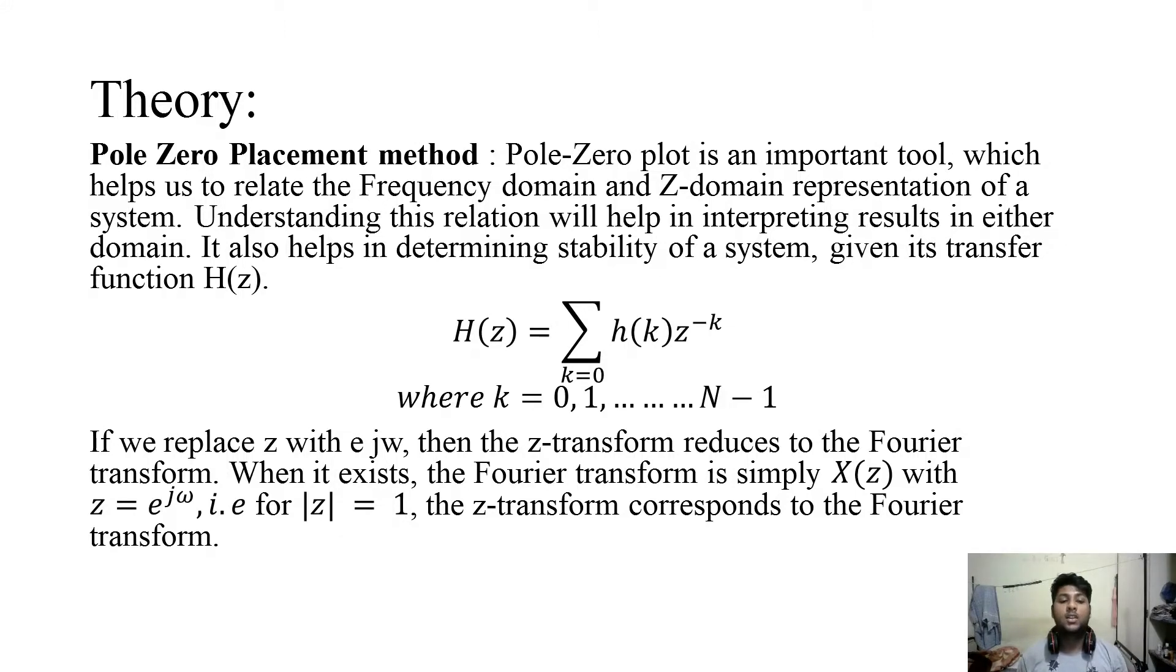Now first we will look at the theory of pole zero placement method. Pole zero placement method is an important tool which helps us to relate the frequency domain and Z domain transformation. So first we will see the expression of Z transform. In the transfer function of Z transform we will replace z by e to the power j omega and thus we can easily get the Fourier transform of the signal.